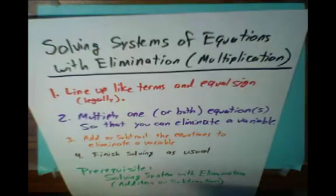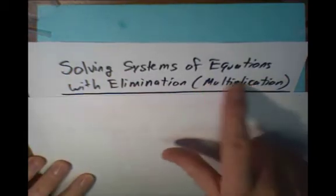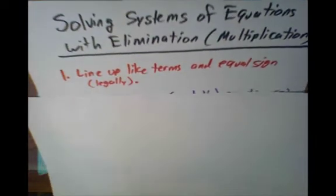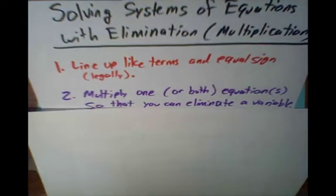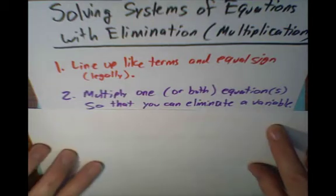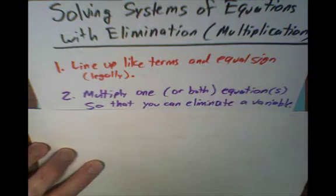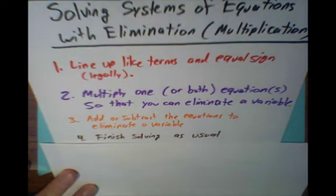Just as a reminder, to solve a system of equations with elimination, and these are more advanced, we have to use multiplication here. We first line up the like terms cleanly. We're going to multiply one or both equations by a value so that we can eliminate a variable. In this particular example, we're going to have to multiply both equations. And then we're going to perform the elimination, add or subtract the equations to eliminate, and then solve as usual.